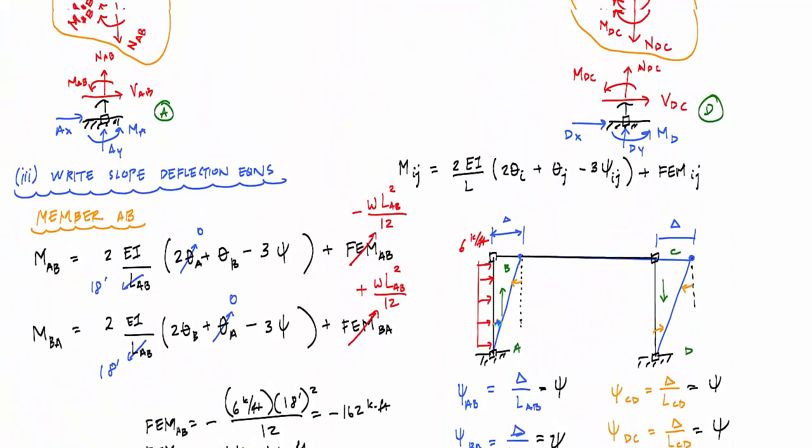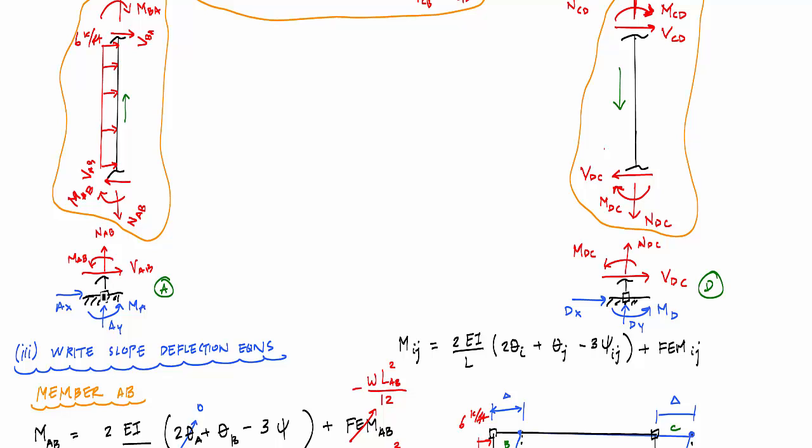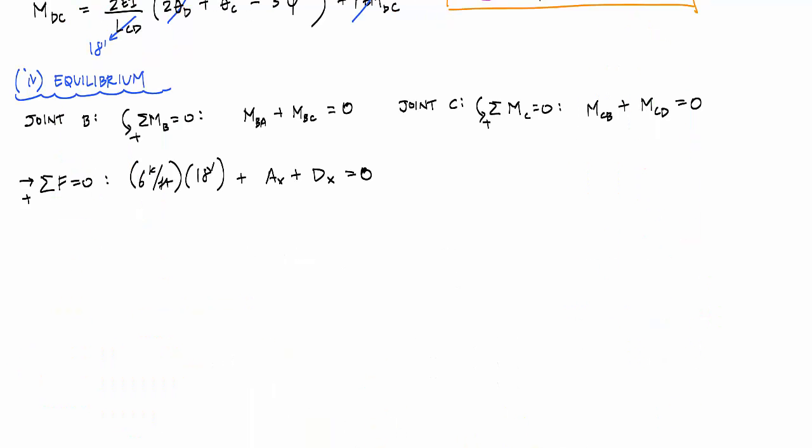If I look at my exploded view again over here, I could look at equilibrium or sum of the forces in the horizontal for joint A, and that would tell me that A_X is equal to negative V_AB. And here, similarly, if I look at joint D, this would also tell me sum of the forces in the horizontal equal to zero for joint D. This would tell me that D_X is equal to negative V_DC. And hopefully all this back and forth isn't making you dizzy.